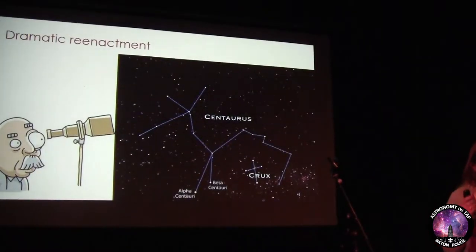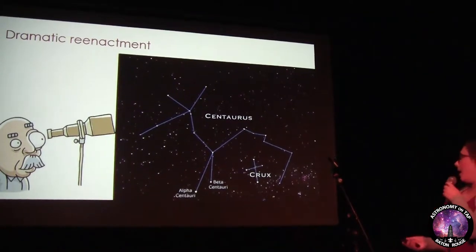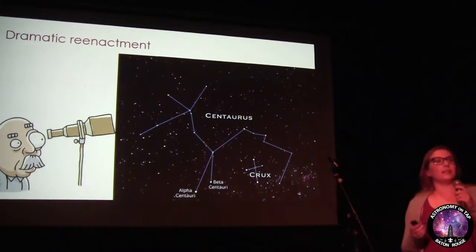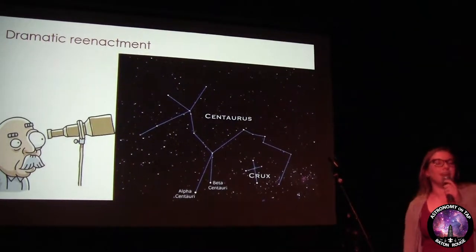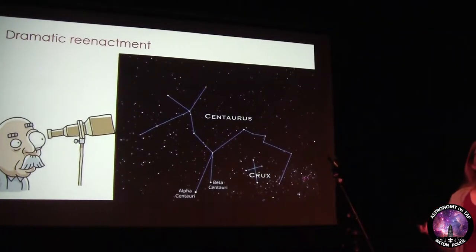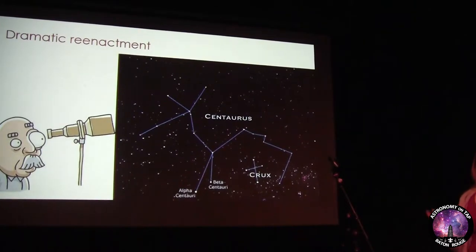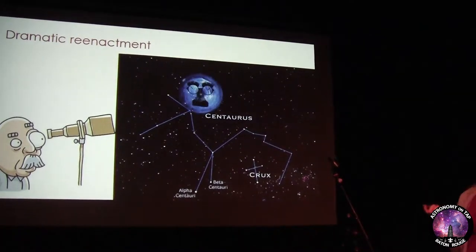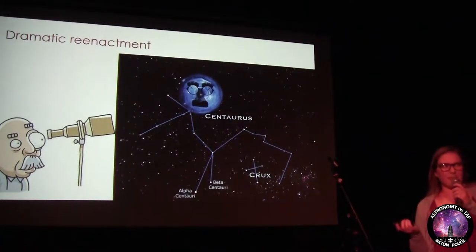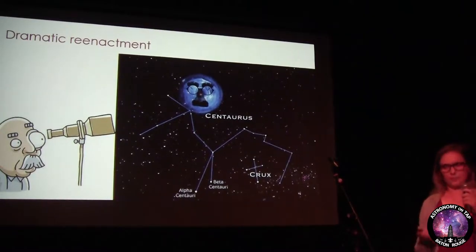Basically he's looking in the telescope, checking out the Centaurus constellation, and he sees something pretty mysterious. He's looking and he's like, what? What's going on here? I don't really get this.